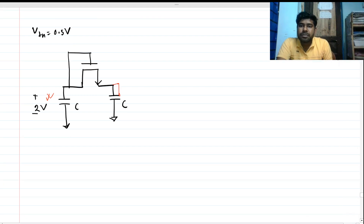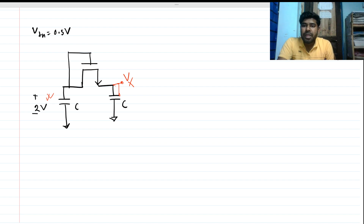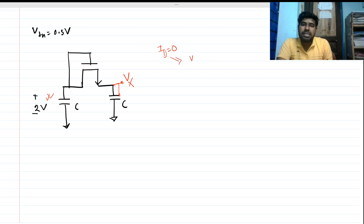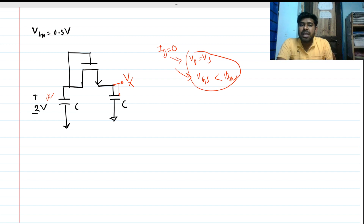We need to find what will be the steady-state voltage at this node, Vx. For steady state in this type of circuit, we know ID will be zero. ID can be zero under two conditions: one is VD equals VS, and if VGS is less than Vtn. These two conditions define our steady state. Since two capacitors are present, we can directly use the charge sharing — the charge conservation law.